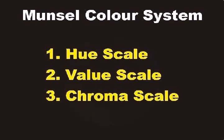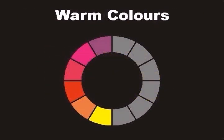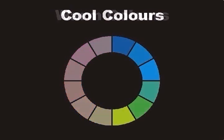Warm colors are found together on one side of the color wheel. They are red, orange, and yellow. Cool colors are found together on the opposite side of the color wheel. They are purple, blue, and green.